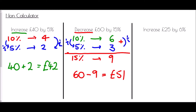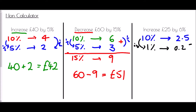The last non-calculator example: increase £25 by 6%. I start with 10% as my starting point. 10% of £25 is £25 divided by 10, which gives me £2.50. Because I want 6%, I go all the way down to 1%. To do that I divide by 10 again, so 2.5 divided by 10 is 0.25, meaning 1% is £0.25.